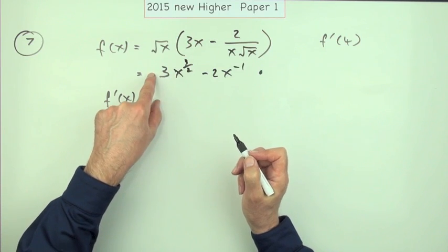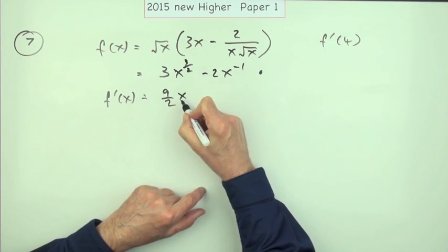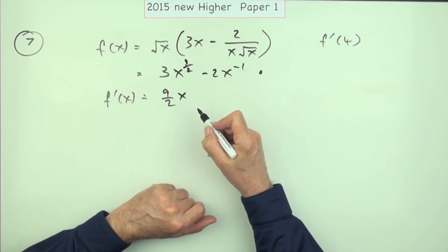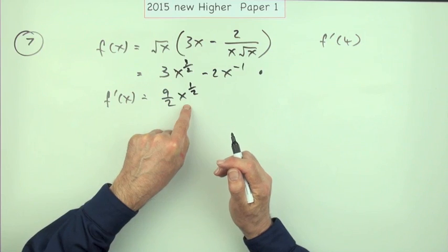Multiply by the power: 3 times 3 upon 2 will be 9 upon 2. Take one off the power, but since it's in halves, you have to take two halves off of that, so it drops back down to a half. And that gets you a mark.